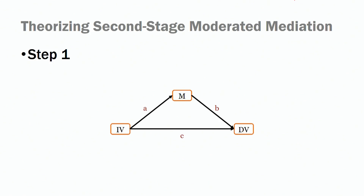So how do we theorize about second stage moderated mediation models? The first step is pretty similar to the first step of first stage moderated mediation models. We need to show that the indirect effect is significant and theorize about it — specifically, the effects of the independent variable on the dependent variable via the mediator.